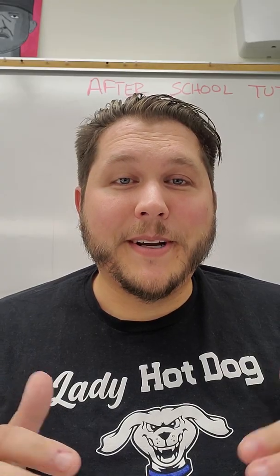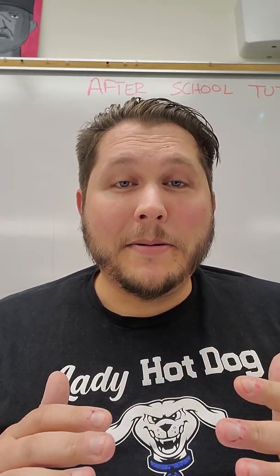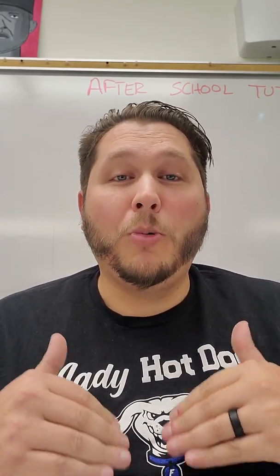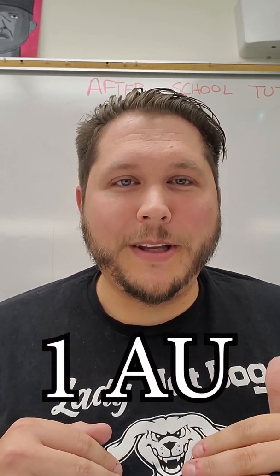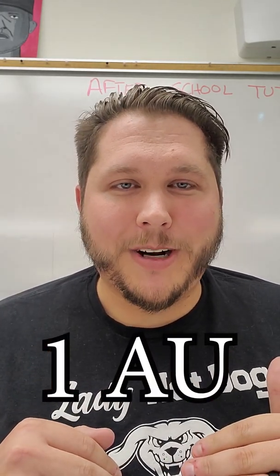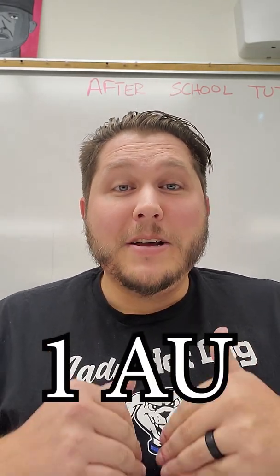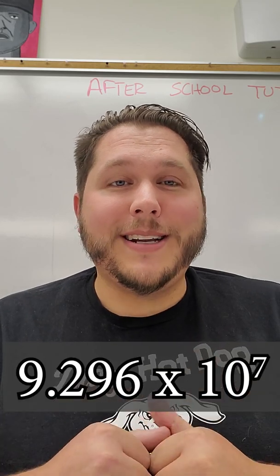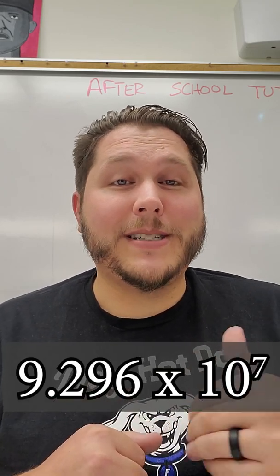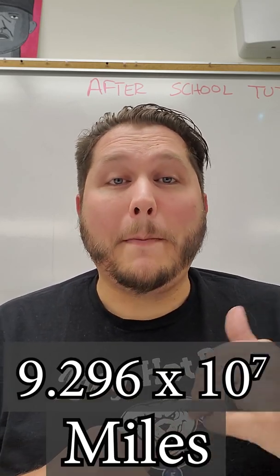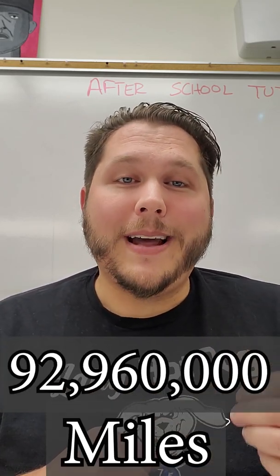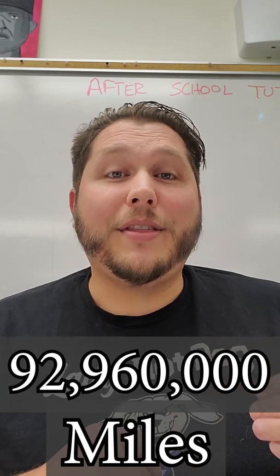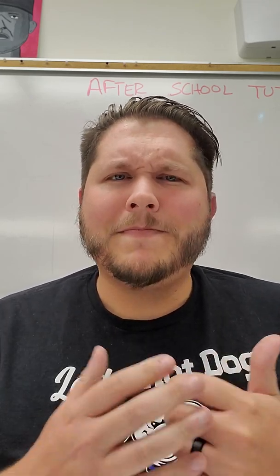Hey astronomy, it's Mr. Field here. I want to take a quick minute to talk about what 1AU is, because we struggle with really big numbers in astronomy. So 1AU is 9.296 times 10 to the seventh power miles, or 92,960,000 miles if we want to expand that out.